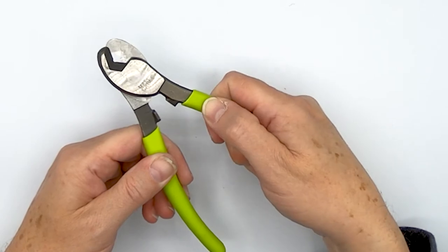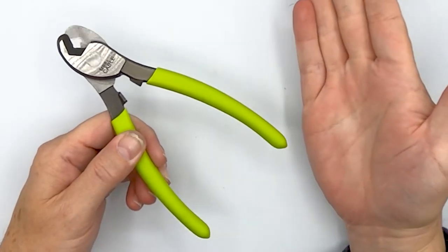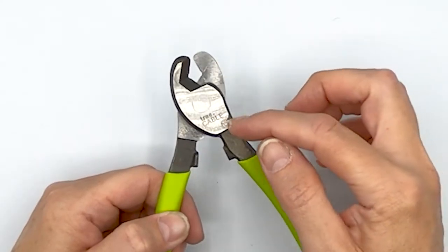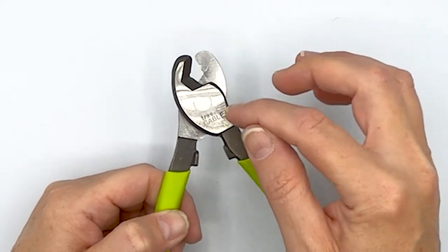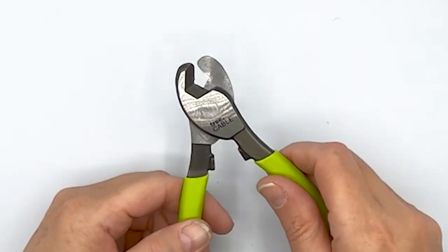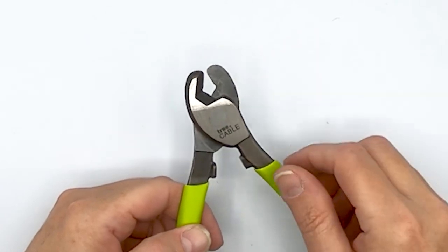which keeps it from slipping out of your hand if your hands are sweaty, like when you're working. And then you've got high carbon steel, which is used for the cutting blades, and an encapsulated rivet.